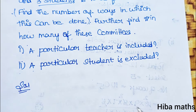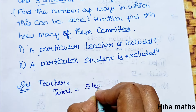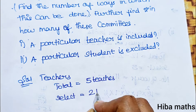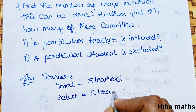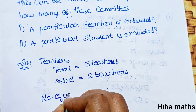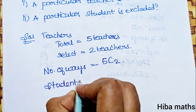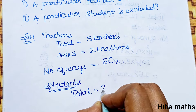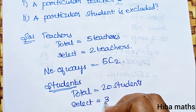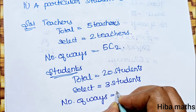Solution: For teachers, total is 5 teachers. We select 2 teachers, so the number of ways is 5C2. For students, total is 20 students. We select 3 students, so the number of ways is 20C3.